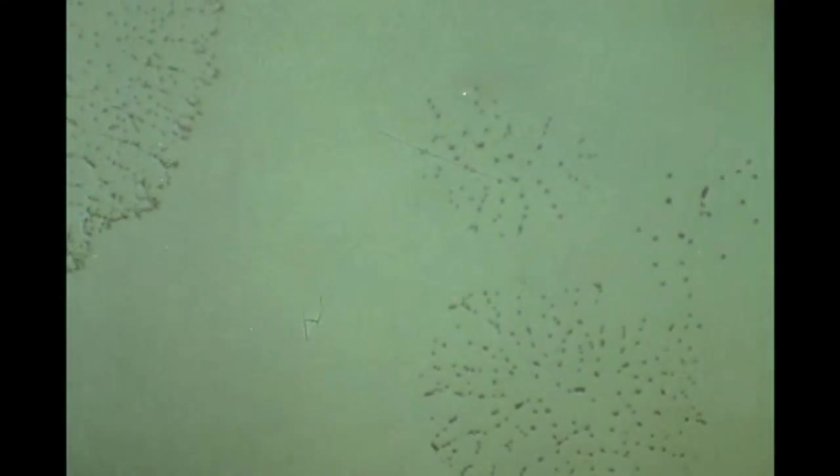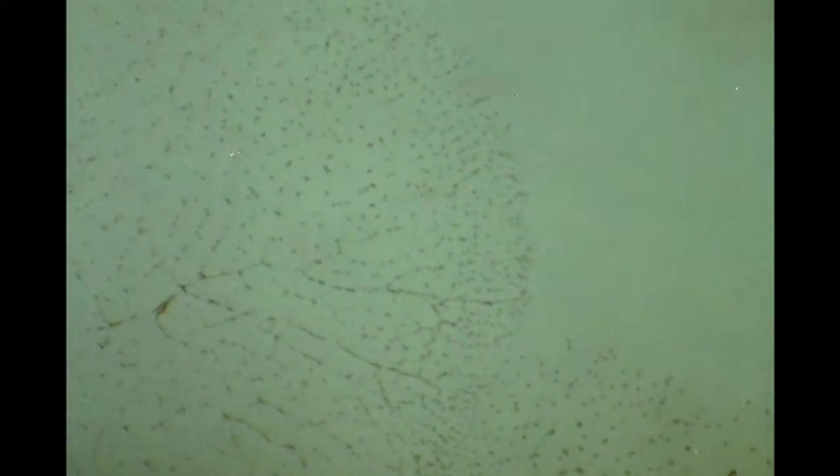Labyrinthula demonstrates a primitive colonial organization characterized by gliding movement of the individual cells within a continuous filamentous network. This low magnification scene scans an expanding colony in which the action has been speeded up 2,000 times.